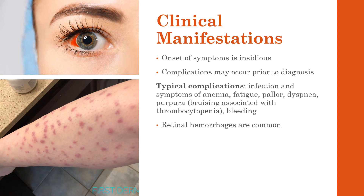Onset of symptoms is typically insidious, and complications from bone marrow failure may occur before diagnosis is made. Complications that stand out are infection and bleeding, but patients can also have fatigue, pallor, dyspnea, bruising associated with thrombocytopenia, retinal hemorrhages, and purpura.